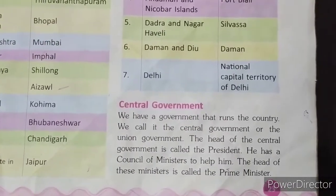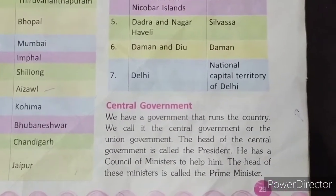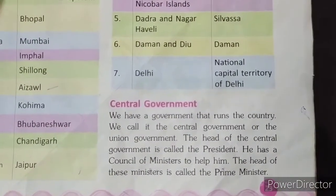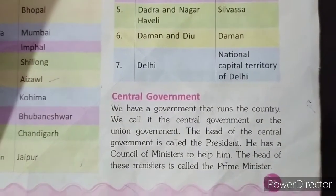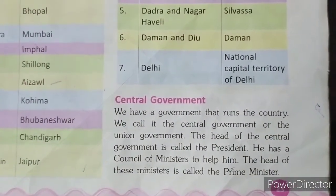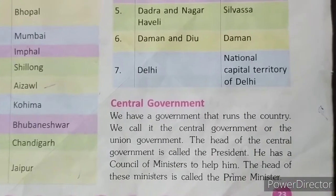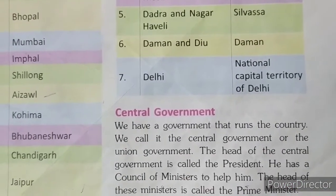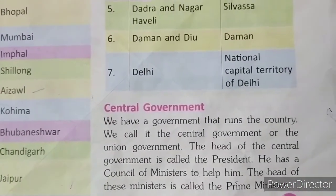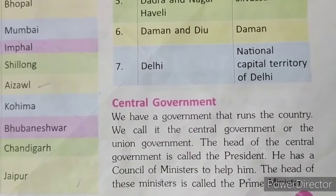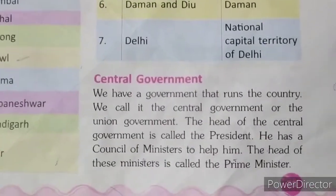Hello students. Welcome to online classes for social studies again. In the last video, we studied about 29 states, 7 union territories and their capitals. Today we will study about central government and state government.